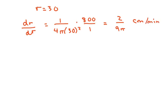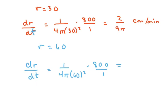Radius is one dimensional. Okay, and then also when r is 60, you do the same thing. So dr/dt equals 1 over 4π times 60² times 800 over 1. And that's going to give you 1 over 18π centimeters per minute.